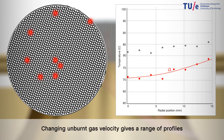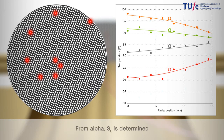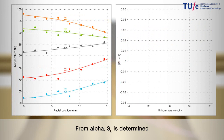Changing the unburnt gas velocity gives a range of temperature profiles. Each measurement is plotted and the laminar burning velocity SL is calculated from these profiles.